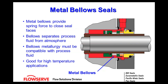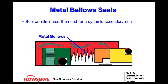A metal bellows provides spring force closure. A metal bellows looks like an accordion — a set of metal rings all welded together. The bellows separates the process fluids from the atmosphere. The bellows metallurgy must be compatible with the pump fluid, and they work excellent in high temperature applications. Because there is no dynamic o-ring, metal bellows are non-pusher seals. If you don't see a dynamic o-ring, you have a non-pusher seal with some sort of bellows, eliminating the need for that secondary gasket.